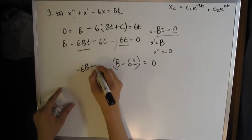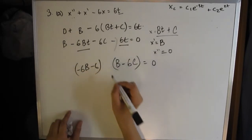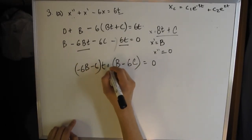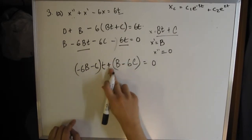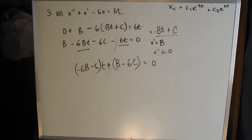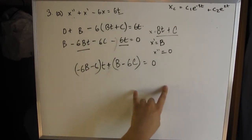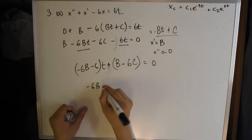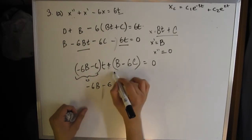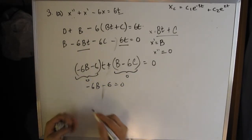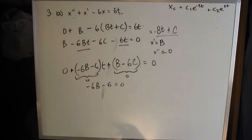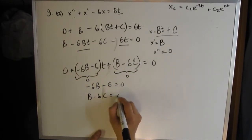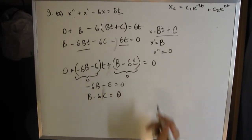We'll get all the ones without a t on one side: b - 6c. And these two together: -6b - 6, all multiplied by t equals 0. From here we solve for both of these equaling 0. So -6b - 6 = 0, and b - 6c = 0. You get two equations because this turned out to be 0.